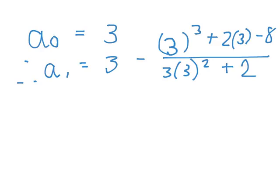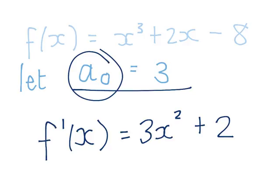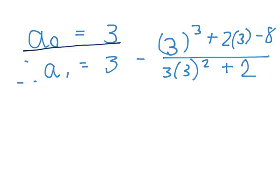So if a0 is 3, then to get a1, we're going to substitute a0 into everywhere that the formula says an. And if you type that in your calculator, you'll see you get 2.1379.